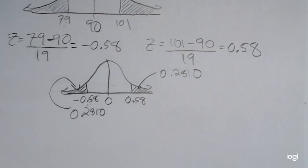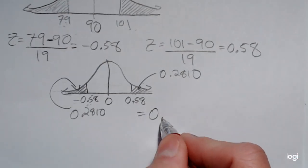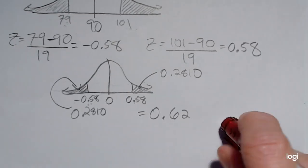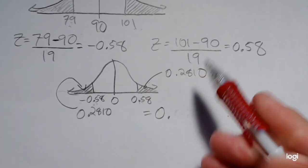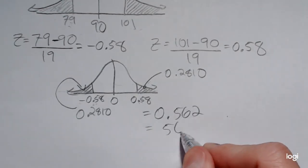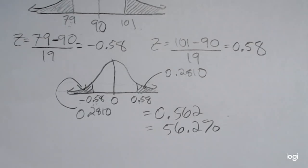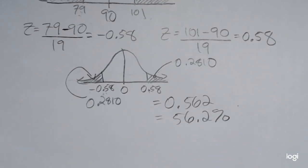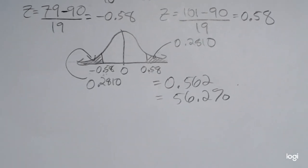So doubling 0.2810, I get 0.5620. Or as a percent, 56.2%. So that's the percentage of companies with revenue less than $79 million or more than $101 million.